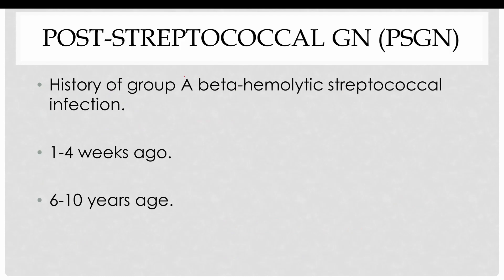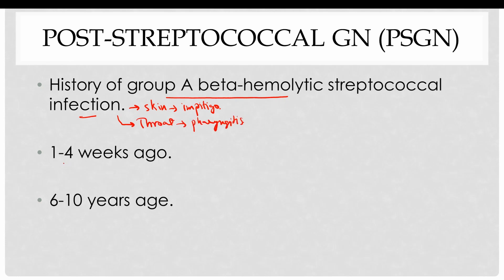Post-streptococcal glomerulonephritis is a form of acute proliferative glomerulonephritis in which there is a typical history of group A beta-hemolytic streptococcal infection. The infection could be either a skin infection known as impetigo, or a throat infection known as pharyngitis. The disease occurs within four weeks of the infection and typically involves children between 6 to 10 years of age, though it rarely also occurs in adults.